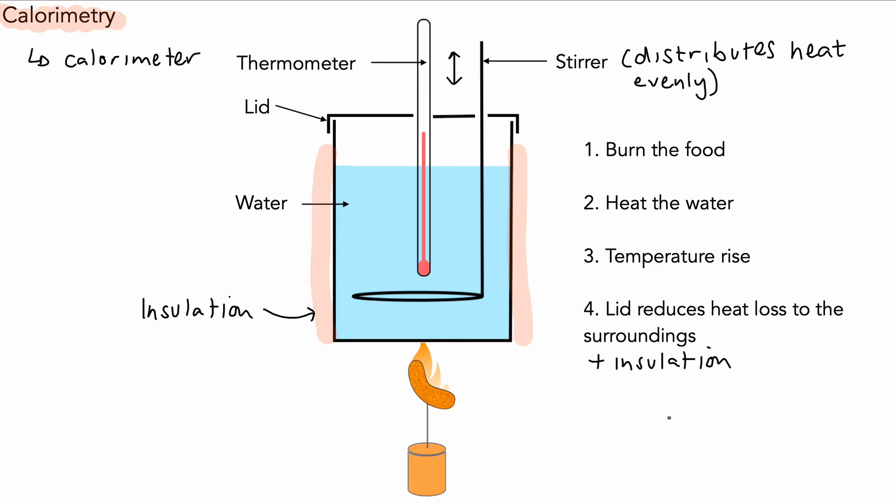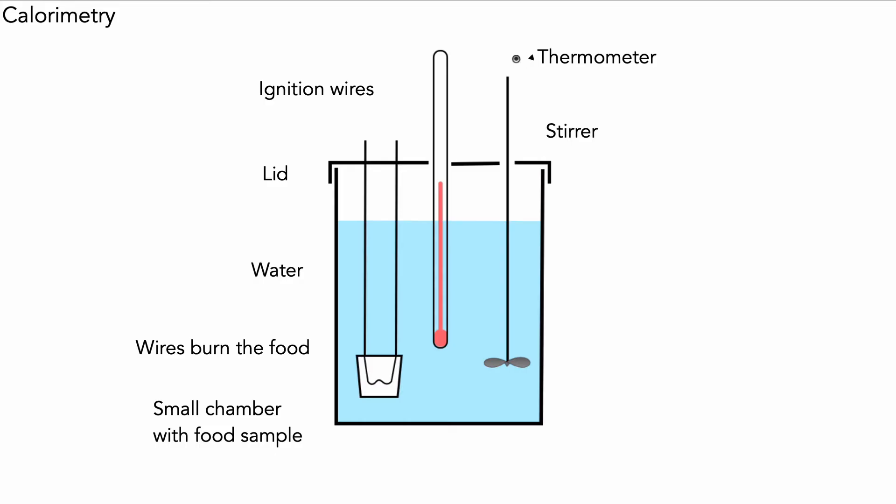We still have the problem that heat is transferred directly from the burning crisp to the surroundings, so we can use a slightly more accurate method still. This is another kind of calorimeter. We have a thermometer, our stirrer, the lid as we had before, and water, but this time the food burns in a little chamber inside the water. We often have some oxygen in there as well, and the wires in there get hot and burn the food through ignition wires.